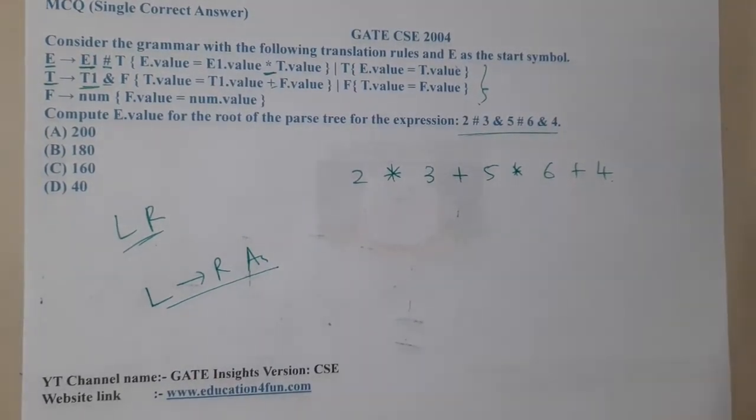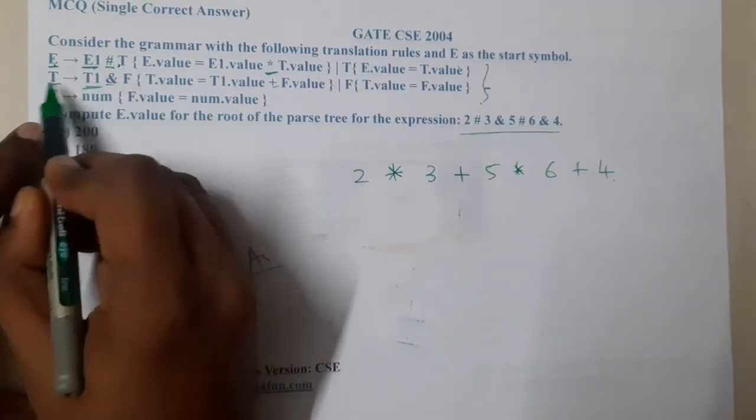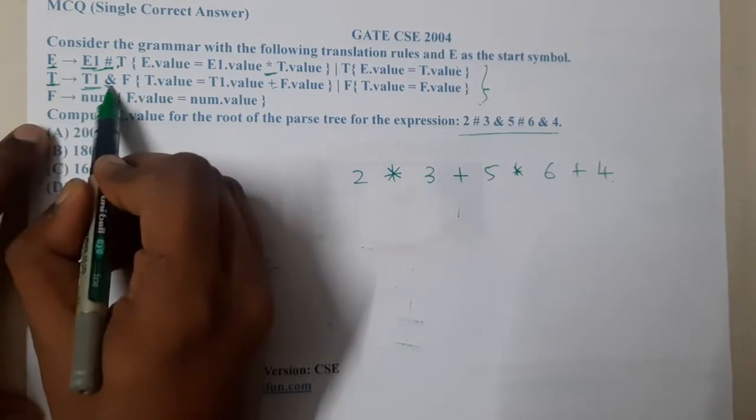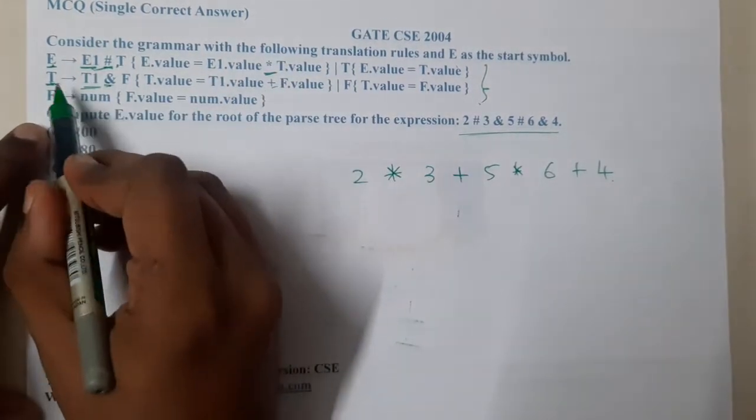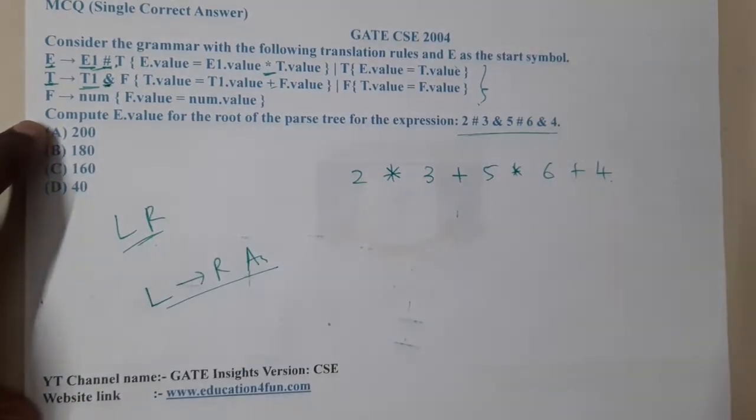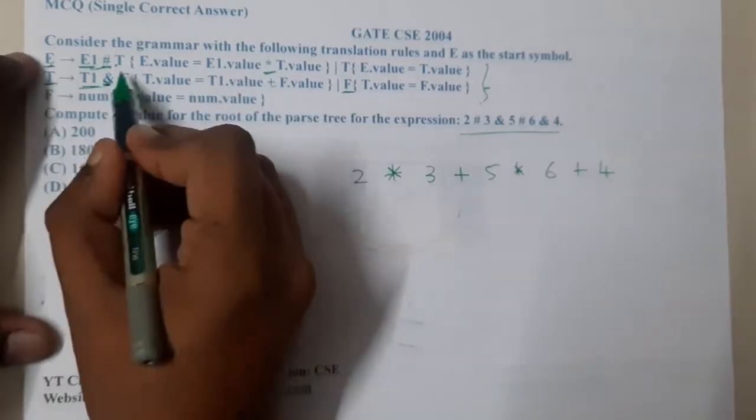If you observe this carefully, from E I can go to T, from T I can get and. So from E I can get into, from T I can get and, but I cannot go in the reverse order. Once I get and, can I get ash again? The answer is no, because from T there is no chance of going to E.